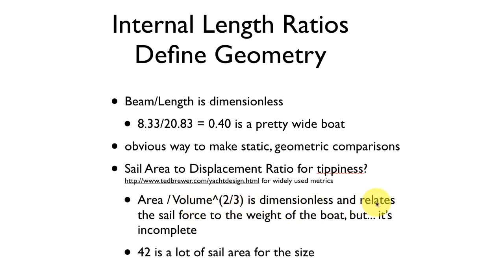It's defined as the sail area divided by the volume to the 2/3 power. That's dimensionless and relates the sail force to the weight of the boat. It allows us to compare boats to know how much power they have in the sail compared to the size of the boat. 42, which is the number for the Ultimate 20, means a lot of sail area for the size.